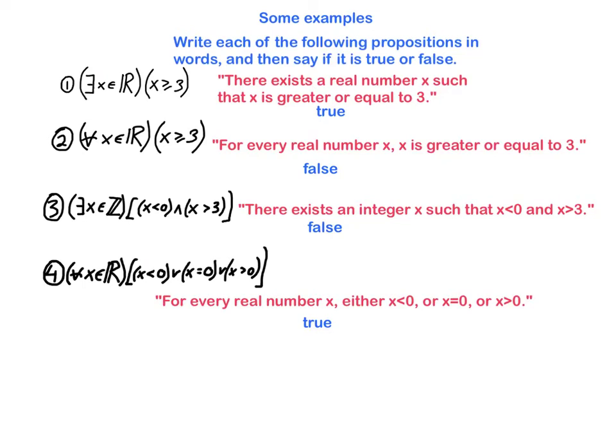Okay, here are my answers. Let's go over them together. So the first thing to notice is you should always read from left to right. So as I read this from left to right, I say there exists a real number x such that x is greater than or equal to 3. Some students will read this as there exists x element of the real numbers such that x is bigger than or equal to 3. So that's what I would consider to be an awkward, stilted kind of way of expressing it. So don't say it that way. Say there exists a real number x such that x is bigger than or equal to 3.